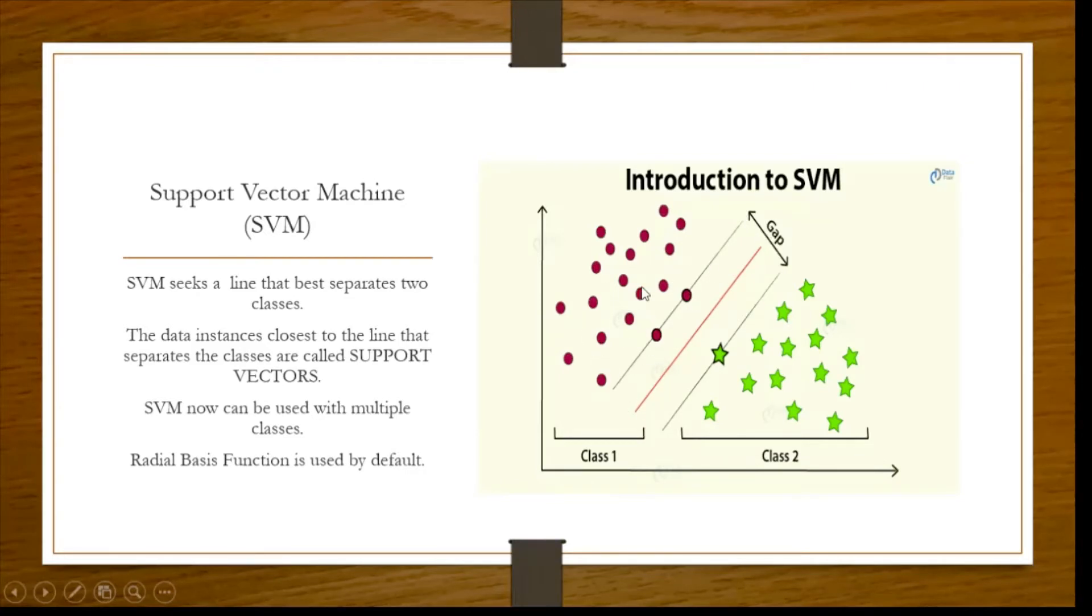And whatever inputs we have, the attributes, if they are falling within this line, this measurement, they will be classified here in class 1. And whatever is falling beyond this, they will be classified as class 2. So this is how SVM works.